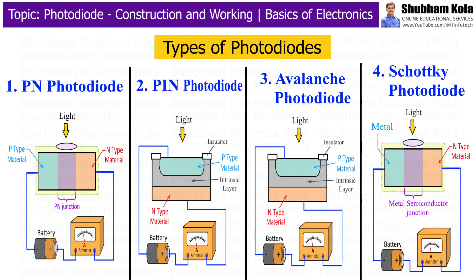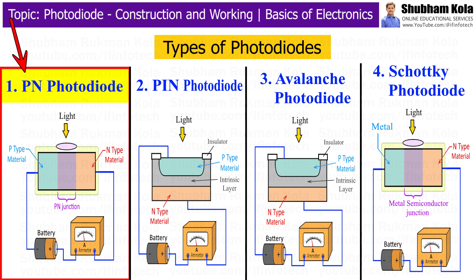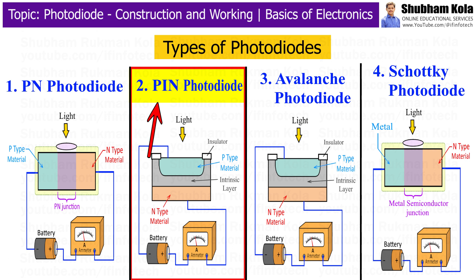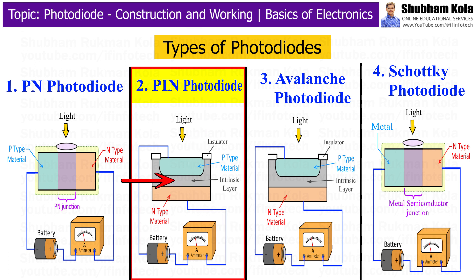Next we will see the types of photodiodes. There are different types based on their design and application. The first is the PN photodiode, which is the basic type where a simple p-n junction is used to convert light into an electrical signal. The second is the PIN photodiode. In this type, an intrinsic layer is added between the p-type and n-type materials. This layer increases the depletion region, making the photodiode more sensitive to light and faster in response.